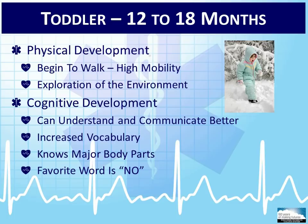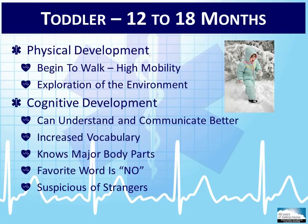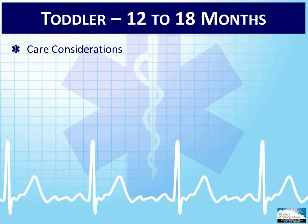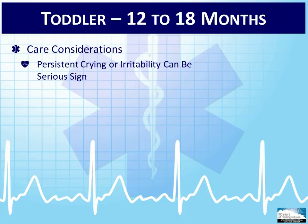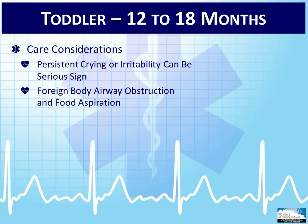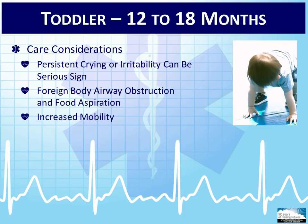Providing choices gives the child a chance to participate without interrupting your assessment. There is an increased suspicion of strangers at this age, so if a child is stable, try to have the parent or caregiver hold the child and involve them in the assessment and treatment process. Persistent crying or irritability can be a serious sign — always look for a cause. More teeth are now available, but the child may not be able to grind up food adequately before swallowing due to a lack of molars, creating a risk of food aspiration.